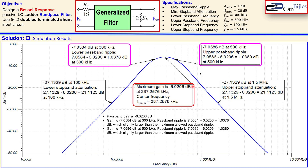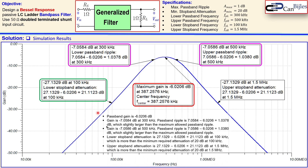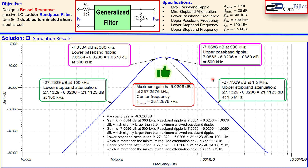At the lower stopband frequency of 100 kHz, the attenuation from the baseline is approximately 21.11dB, which exceeds the required 20dB minimum stopband attenuation. At the upper stopband frequency of 1.5 MHz, the attenuation is also approximately 21.11dB. Although the passband ripple is slightly more than specified, it is close enough for practical purposes. We can conclude the design meets all specifications. If you have any questions or comments about this example, please let me know. See you next time.